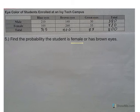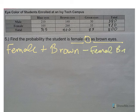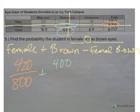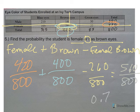Number five: find the probability that a student is female or brown. We're talking about female plus brown eyes, and the overlap would be female with brown eyes — yes, you can be both. We're taking the female row and the brown column, but we're counting females with brown eyes twice. Females: 420 out of 800, plus brown eyes: 400 out of 800, minus the overlap of 260 out of 800. Together, that's 560 out of 800, which as a decimal is 0.7.